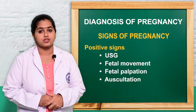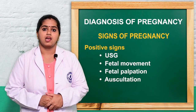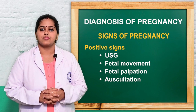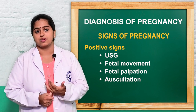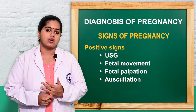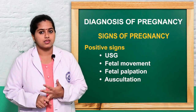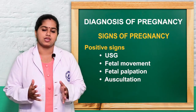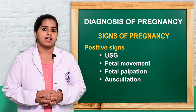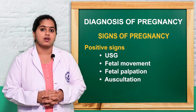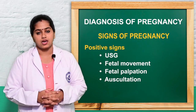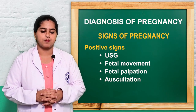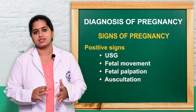The last category is positive signs of pregnancy, which can completely confirm the pregnancy. These include ultrasonography — either transvaginal or transabdominal — fetal movement, fetal palpation, fundal height measurement, fetal presentation, and auscultating the fetal heart rate (FHR) and fetal heart sounds (FHS). These are the major points for confirmation of pregnancy, covering presumptive, probable, and positive signs.